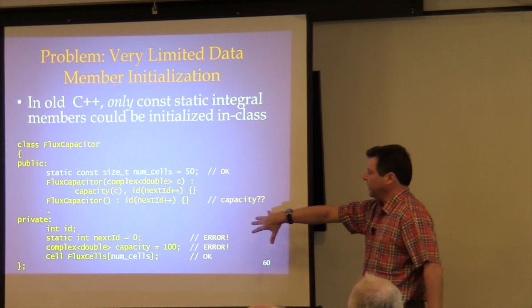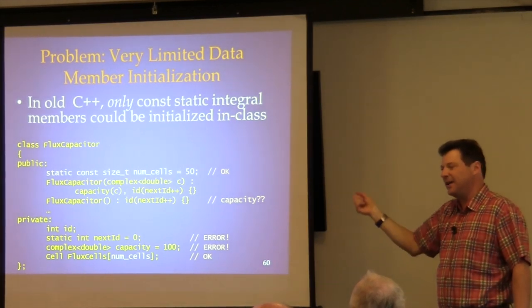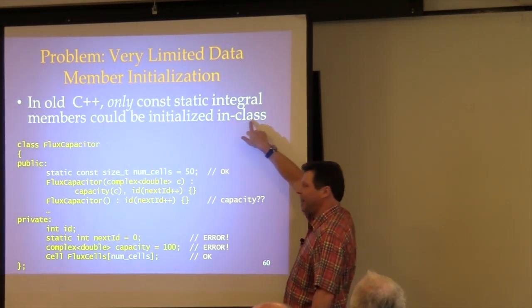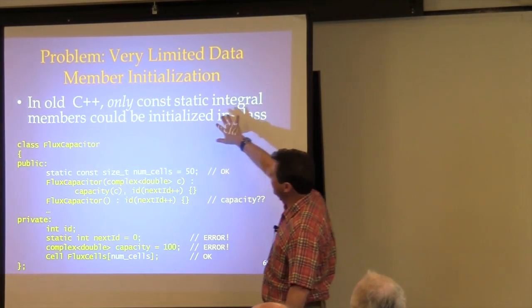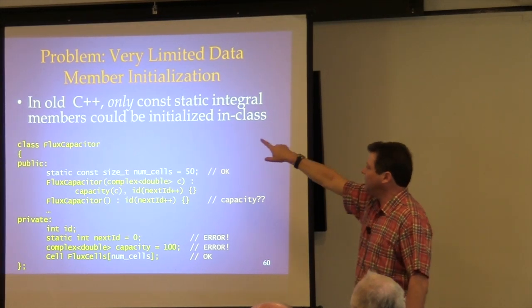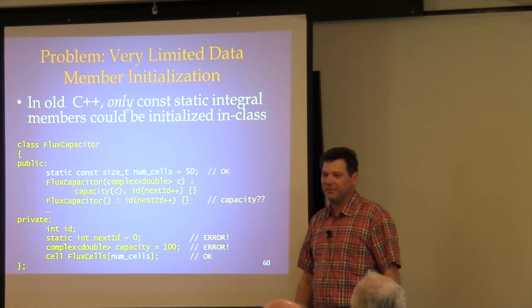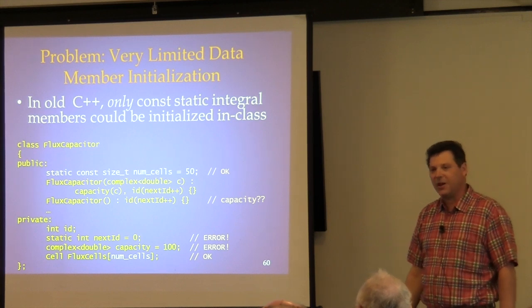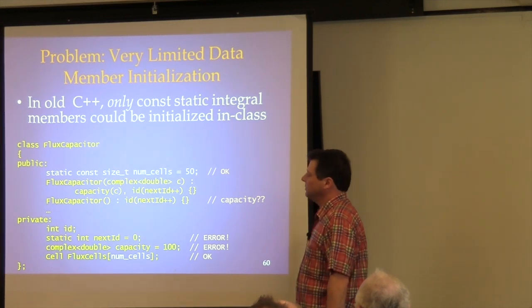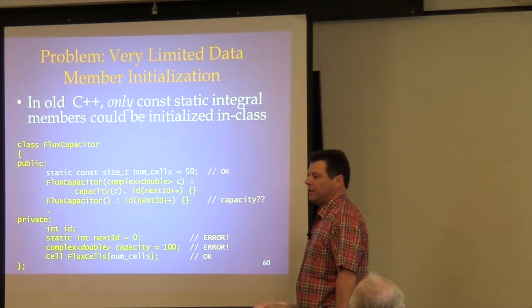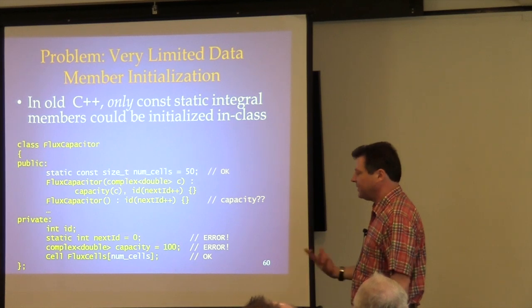Now let's look at data. In old C++, the only data members you could initialize in-class — inside the braces of the class definition — are const static integral data members: bool, short, long, int, unsigned, unsigned long, and enums. The reason the language allowed that is so you could have an initialized variable to use as an array dimension, which must be a static const integral type.